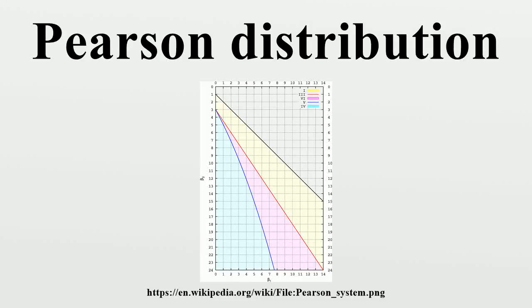The Pearson Distribution is a family of continuous probability distributions. It was first published by Carl Pearson in 1895 and subsequently extended by him in 1901 and 1916 in a series of articles on biostatistics.